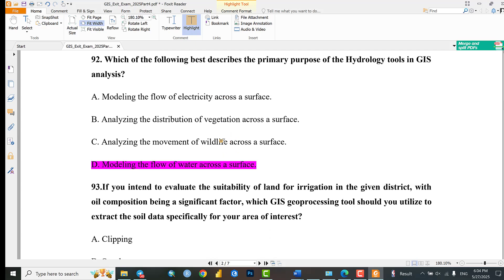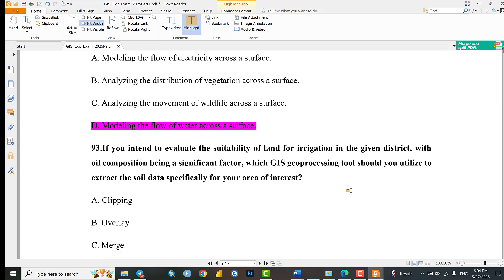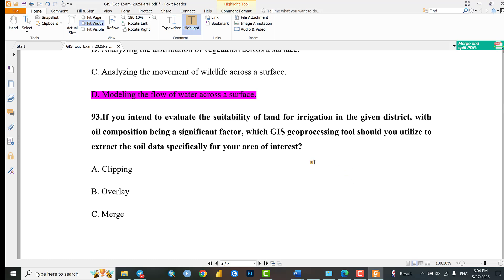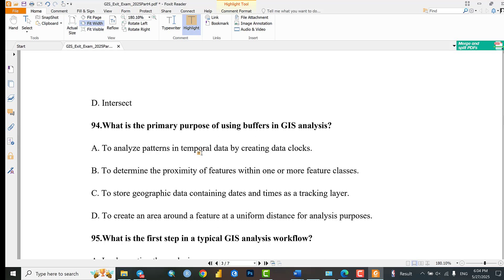Question 93: If you intend to evaluate the suitability of land for irrigation in a union district with soil composition being a significant factor, which procedure should you utilize to extract the soil data specifically for your study area of interest? The answer is clipping.